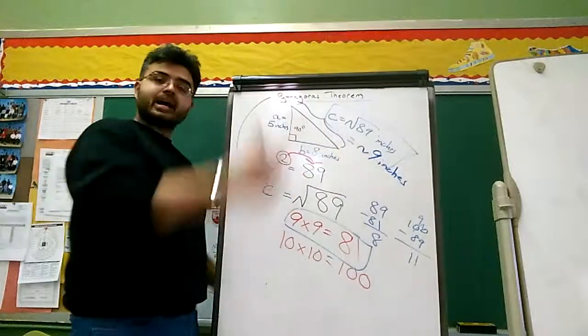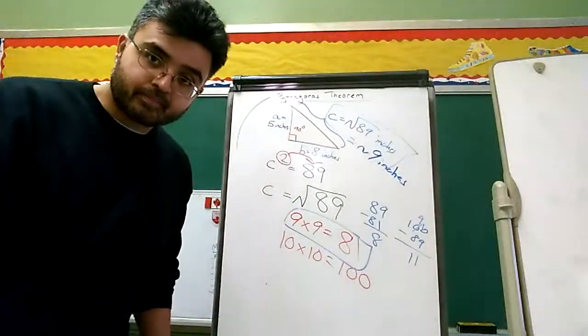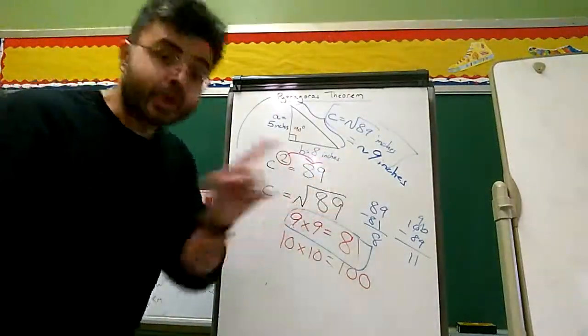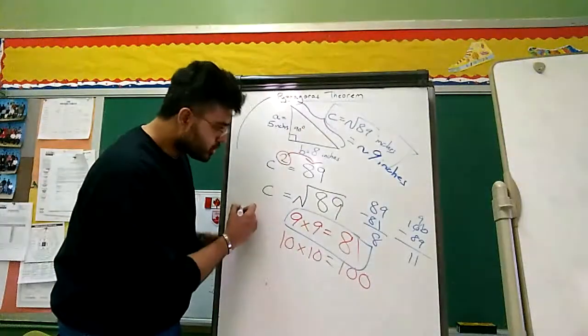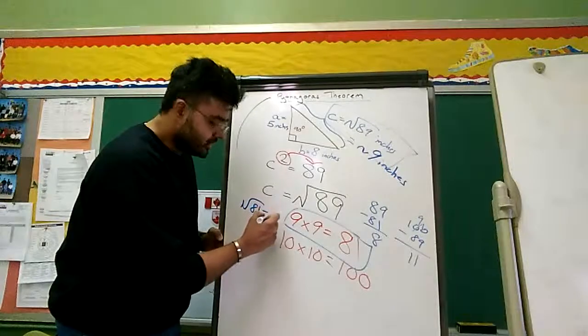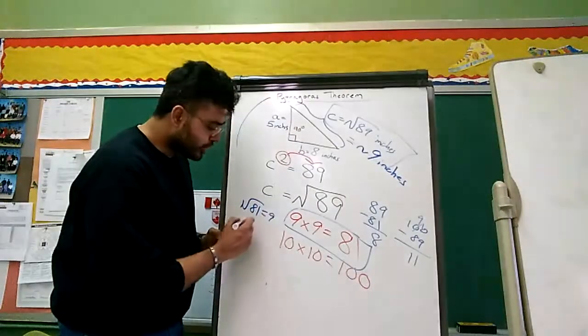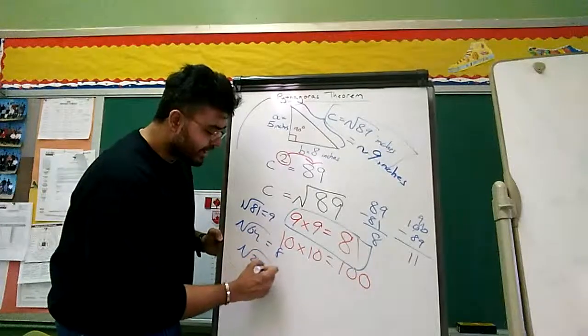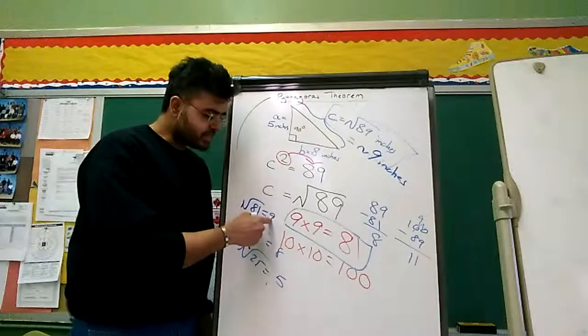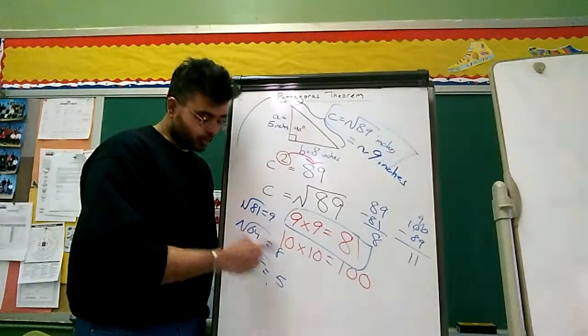And this is how you do a Pythagoras theorem. And this is how you round a square root. This is easy. Square root of 81? 9 times 9. Good. Square root of 64? 8. Square root of 25? 5. Easy. 9 times 9? 81. 8 times 8? 64. 5 times 5? 25.